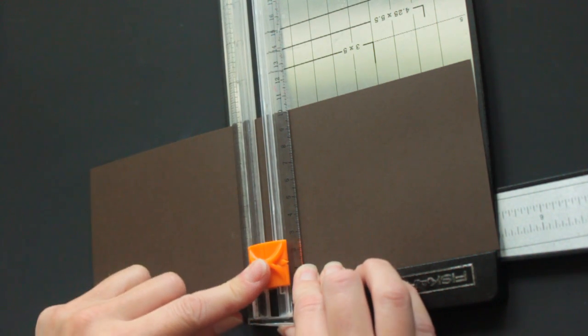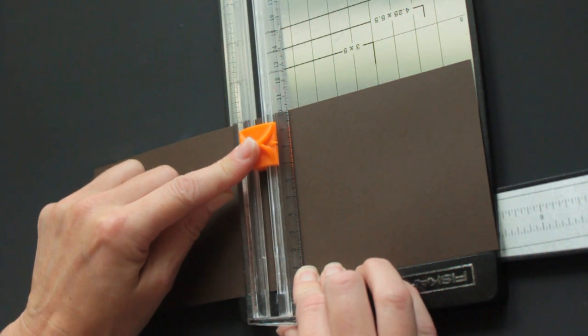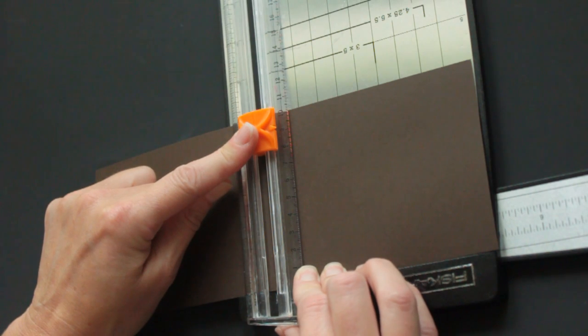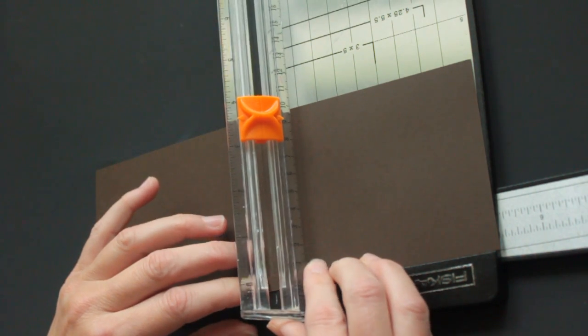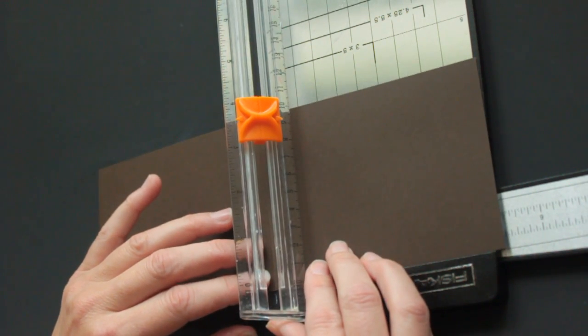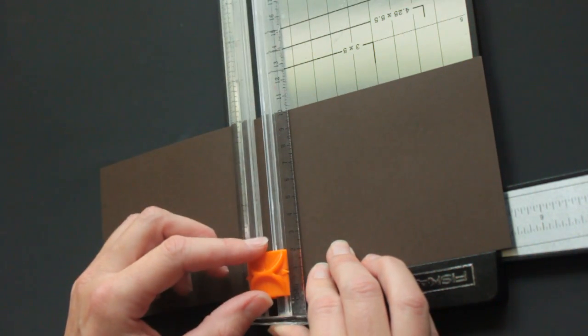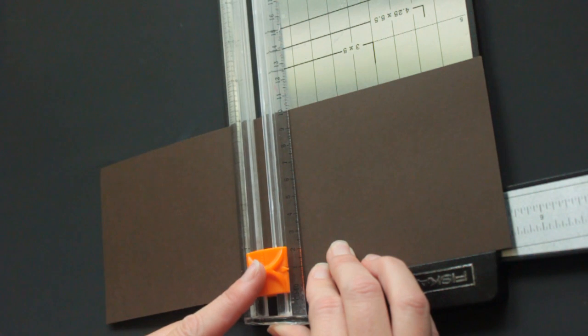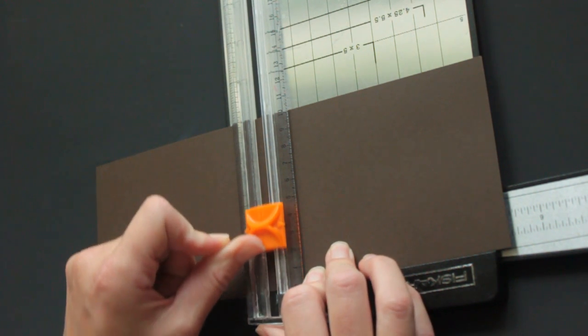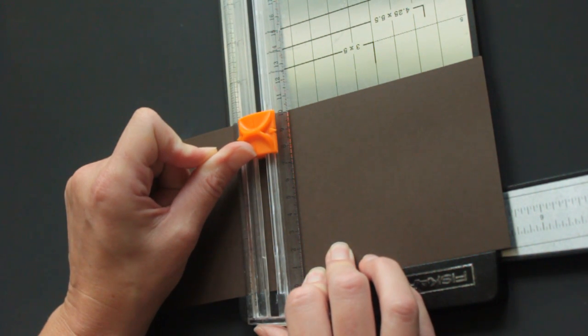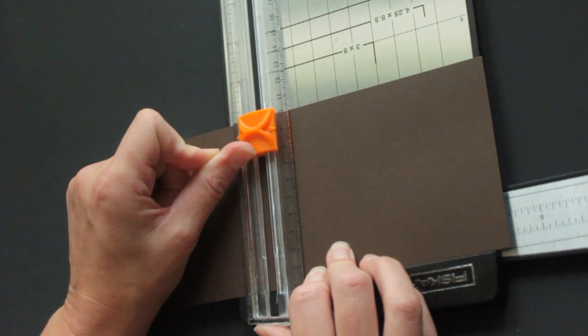So, I start at 3 1/8, and I cut to 3 5/8, and I move it over to 5 1/8, and do the same again. Start at 3 1/8, and cut to 3 1/8.